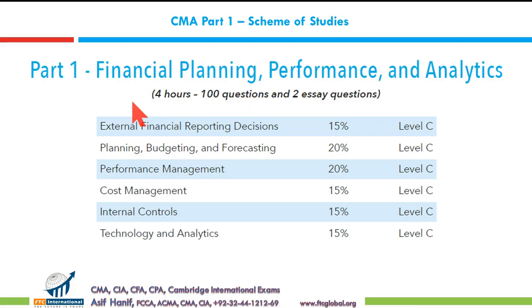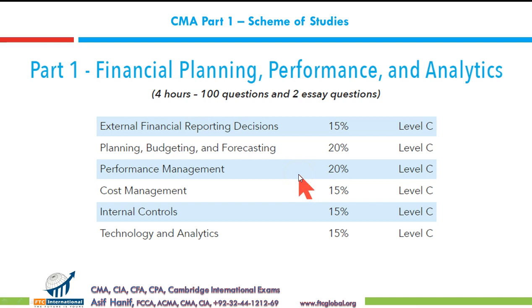Section C, Performance Management. This is the third section in your CMA Part 1 and 20% weightage has been assigned to this section. It is considered to be one of the difficult ones in your entire CMA, specifically the overhead variances. They are the most challenging areas in your entire CMA, so I hope we will be able to discuss things in sufficient detail to help you grip this difficult area.